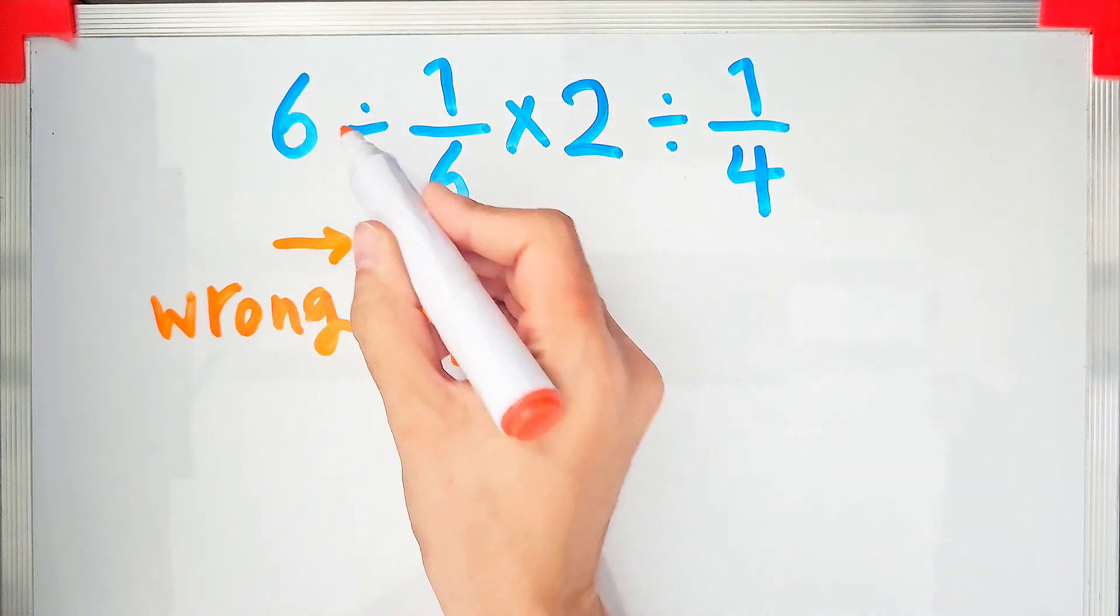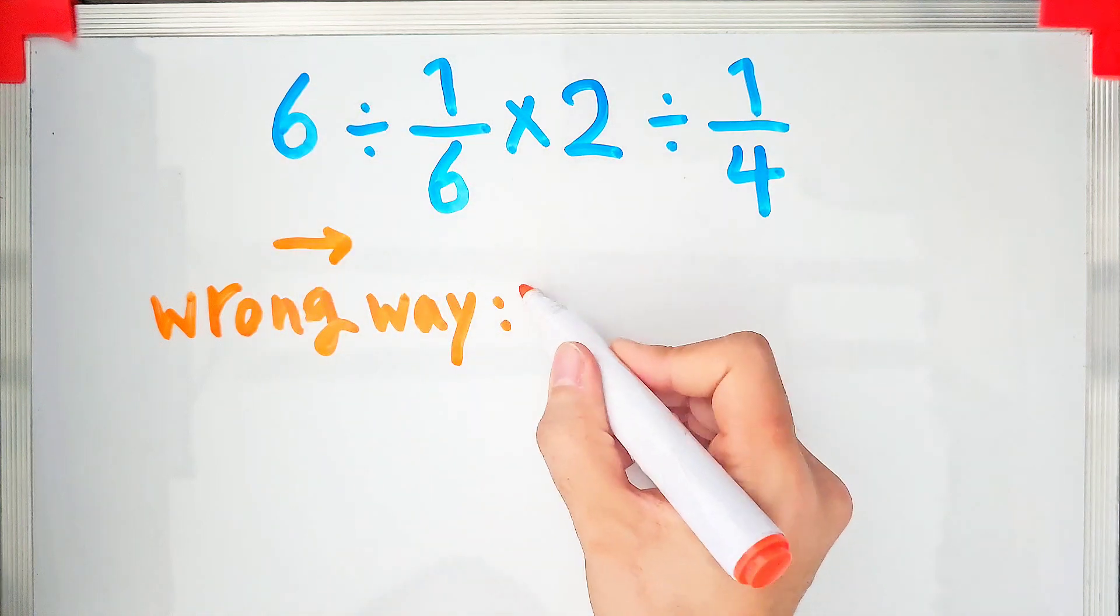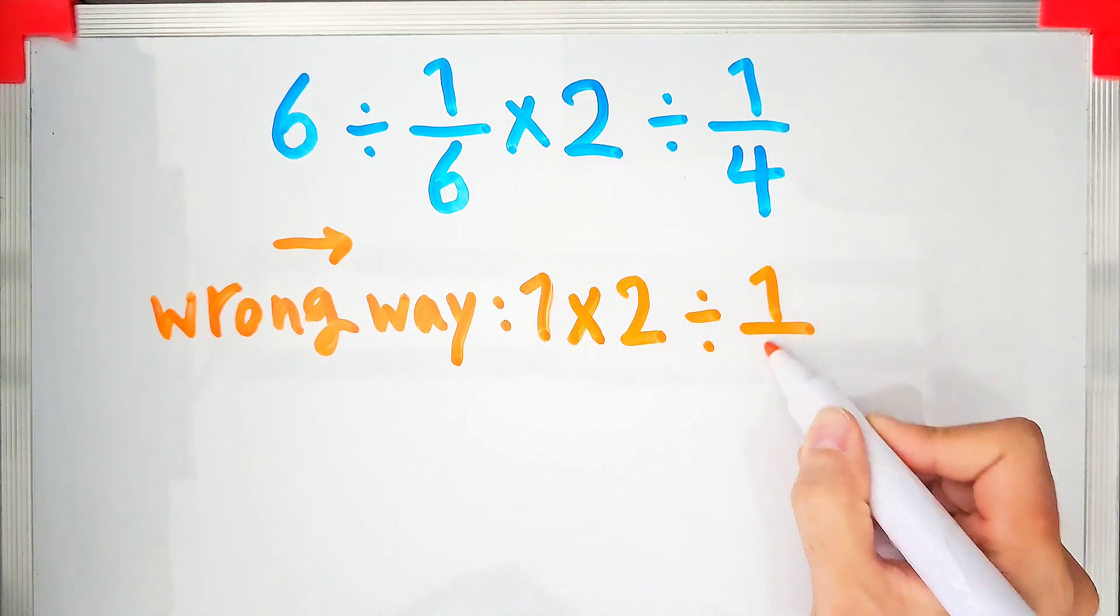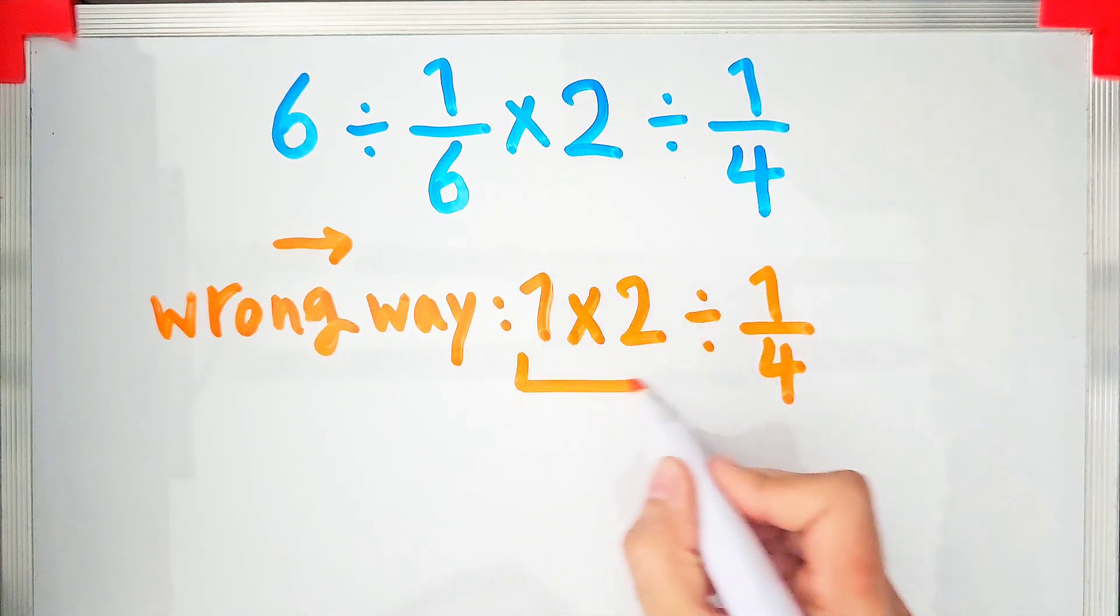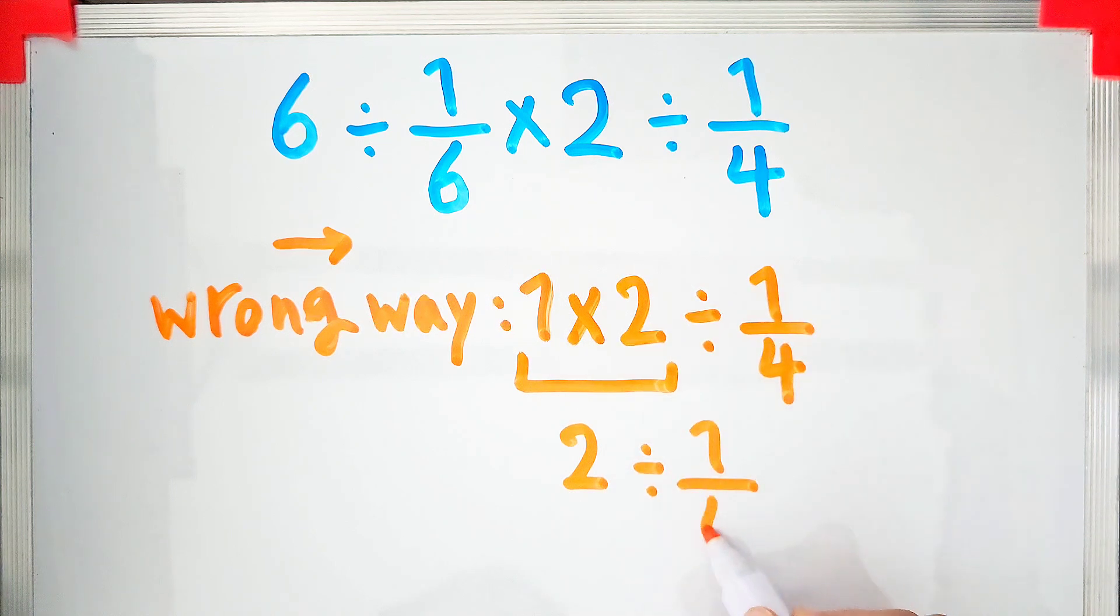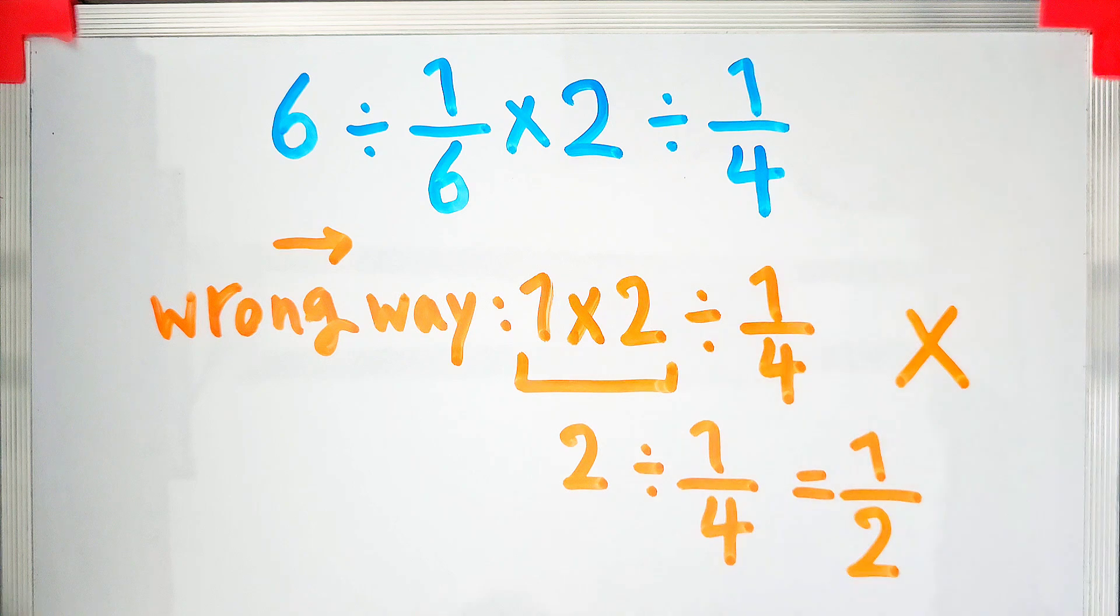In the first step they cancelled out the six. After that they have a new expression, and they again start from the left and simplify: one times two equals two divided by one fourth. They divided two and four by two and they get an answer, but it's wrong. But how do you think we should solve this question correctly?